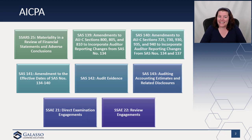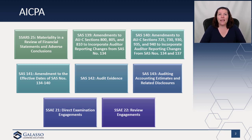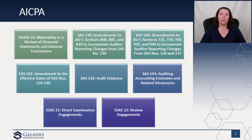Then we have SAS 139 through 142. SAS 139 and 140 are wrapping up the reporting suite. We had SAS 134, which creates a brand new audit report — really the basic report under GAAP. SAS 139 focuses on the 800 section, whether it's going to be a special purpose framework or summary financial statements, what changes in our report to conform with SAS 134. SAS 140 has conforming amendments with the 900 section, including the new single audit report incorporating terminology from the uniform guidance and the 2018 Yellow Book. That really wrapped up the reporting suite.